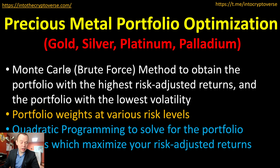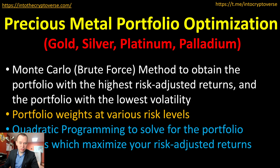We're going to start with a brute force approach — the Monte Carlo method — to obtain the portfolio with the highest risk-adjusted returns, which is the Sharpe ratio. We're also going to look at the portfolio with the lowest volatility, for those who are more risk-averse and would prefer lower expected returns in exchange for lower volatility. We'll then finish the video using quadratic programming to solve for the portfolio weights that maximize risk-adjusted returns.